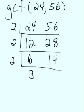So take another 2 out. Finally, arriving at the numbers 3 and 7. And we know that nothing will go into both 3 and 7.